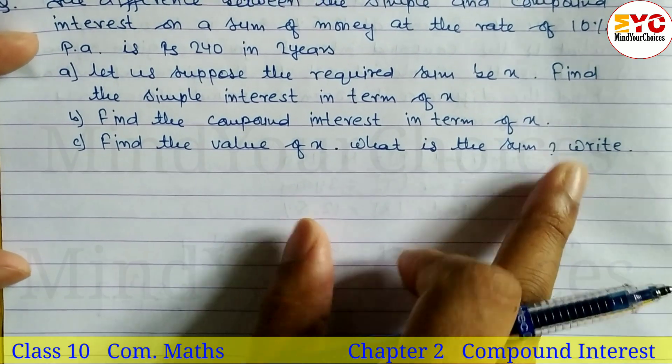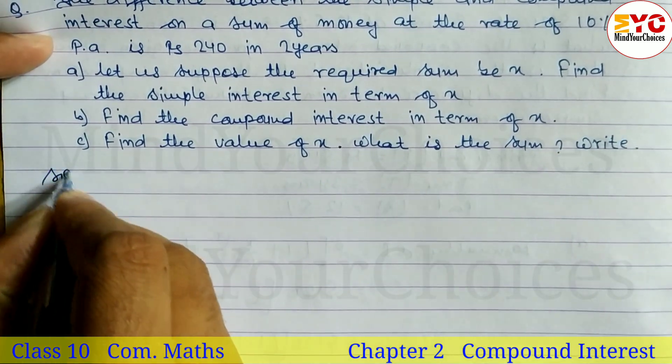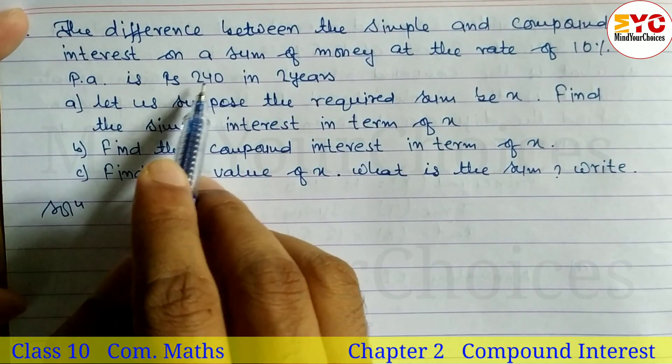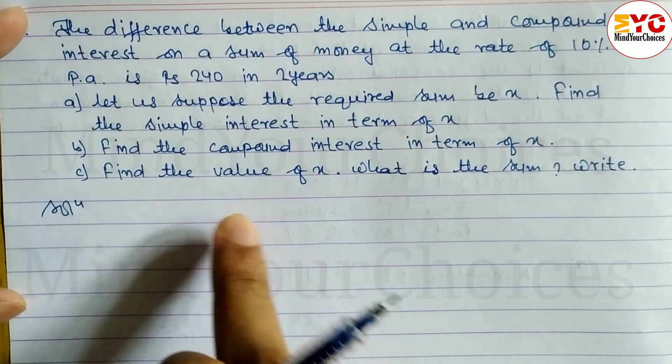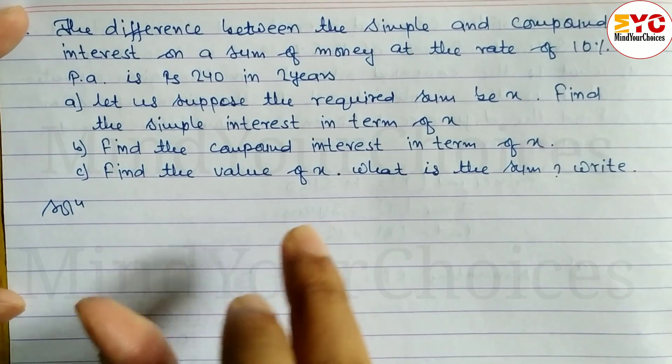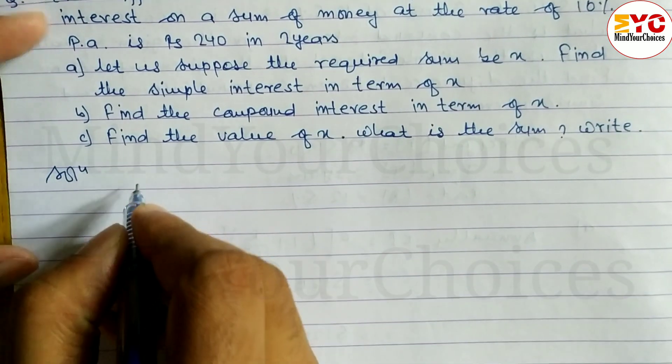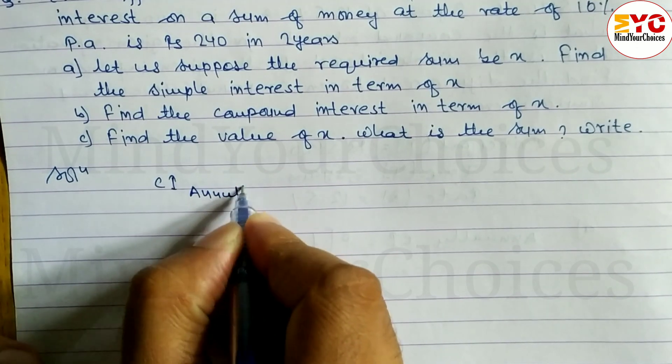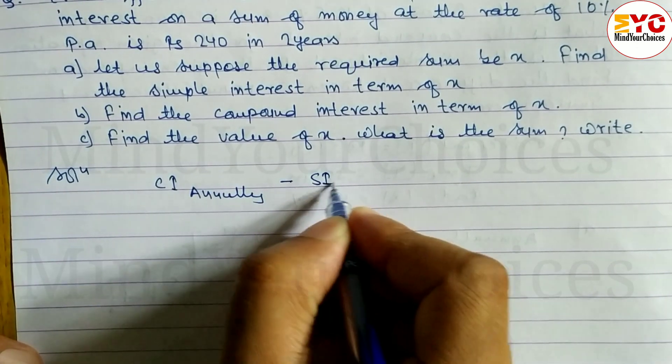Let's take a start here. The question is about the difference between compound interest and simple interest which is 240. Since CI is greater, CI annually minus SI is equal to rupees 240.